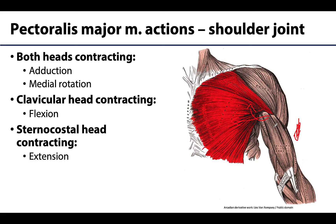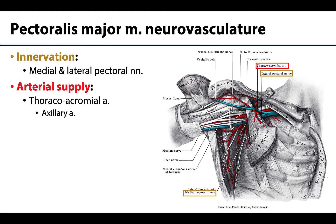The opposite happens when the sternocostal head contracts alone, which will extend the shoulder — moving it back towards anatomical position from a flexed position, or past anatomical position in a more posterior direction. So moving your arm anteriorly is flexion, and moving your arm posteriorly is extension.